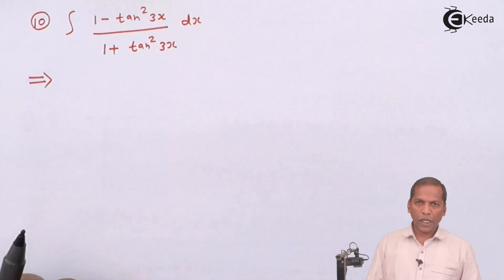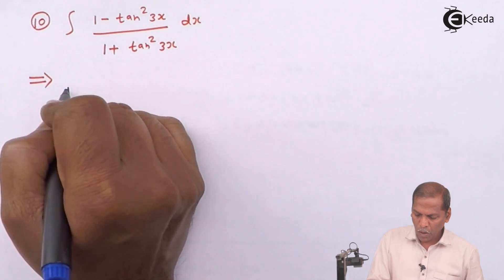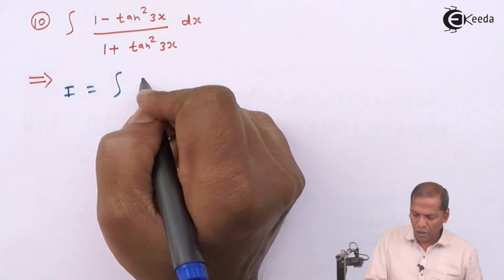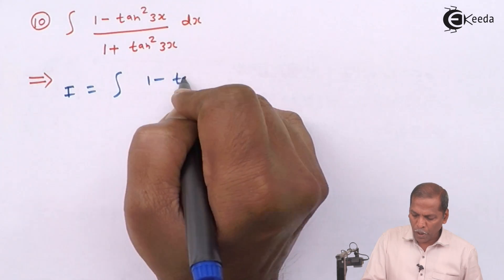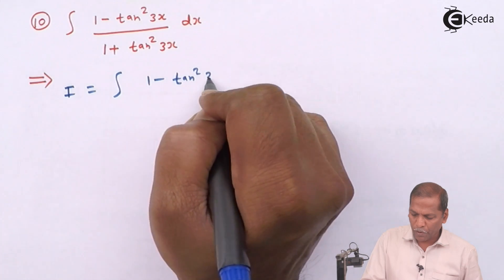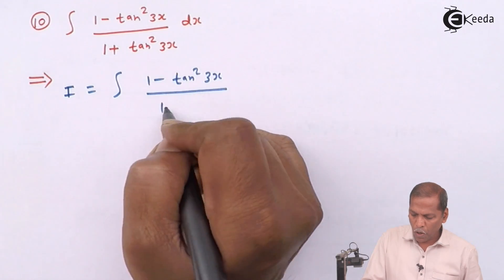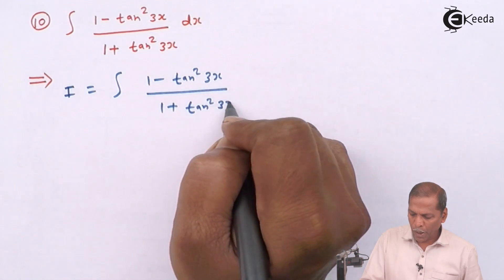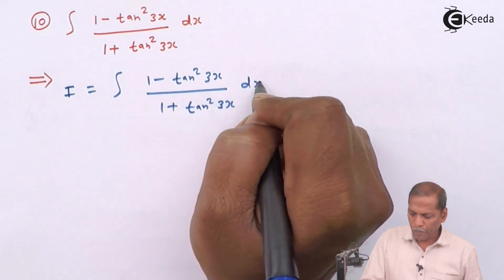Now let's see the solution. First of all, I is equal to integral 1 minus tan square 3x upon 1 plus tan square 3x dx.